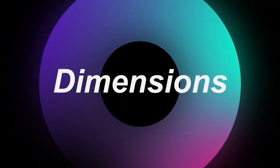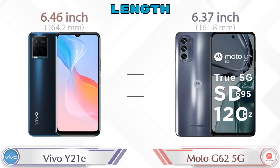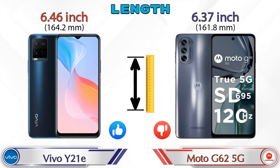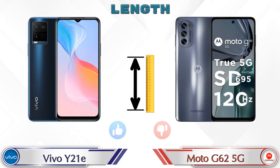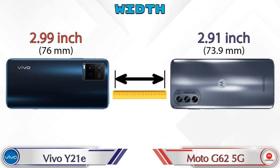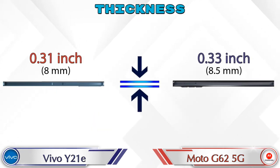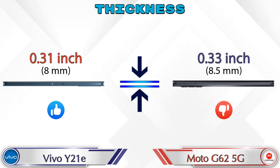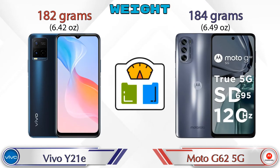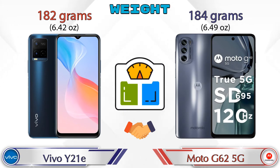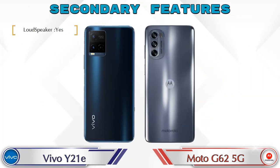Now let's check the details about dimensions. Talking about the length: the Y21e is 6.46 inches and the Moto G62 5G is 6.37 inches, which is less than the Y21e. Width: the Y21e is 2.99 inches and the Moto G62 5G is 2.91 inches. Thickness: the Y21e is 0.31 inches and the Moto G62 5G is 0.33 inches, slightly bigger than the Y21e. Weight: the Y21e is 182 grams and the Moto G62 5G is 184 grams, which are almost similar.